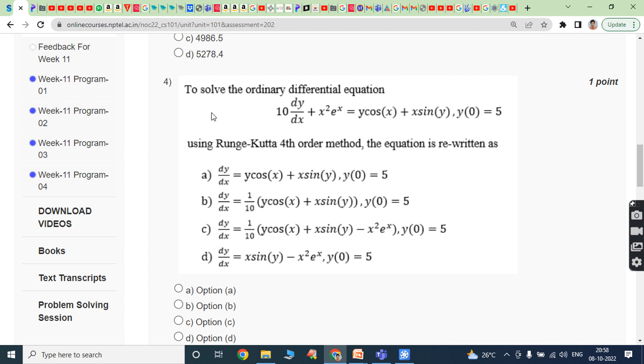Fourth question: To solve the ordinary differential equation 10 times dy/dx plus x squared times e to the power x equals y cos x plus x sin y, where y(0) equals 5, using Runge-Kutta fourth order method, the equation is rewritten as option C: dy/dx equals 1/10 times (y cos x plus x sin y minus x squared e to the power x), y(0) equals 5.